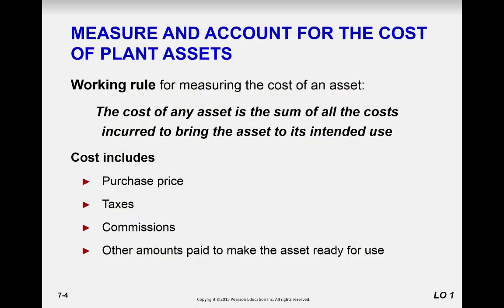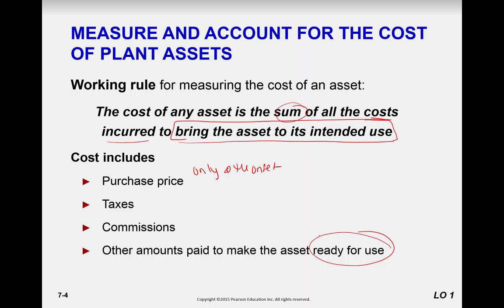The cost of any asset is basically the sum of all the costs incurred to bring the asset to its intended use. We can include not only the purchase price, but any taxes and commissions paid to acquire the asset — only at the onset. Once the asset is put into use, repairs and maintenance are considered an expense and cannot be added to the cost. Any cost you are able to capitalize — meaning moving it to the balance sheet as an asset rather than expensing it — is called capitalization.